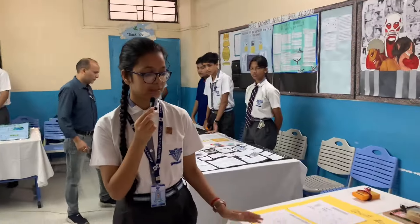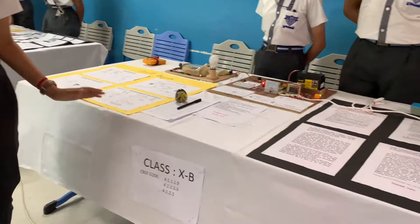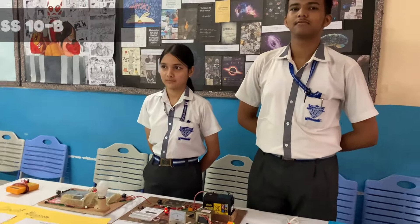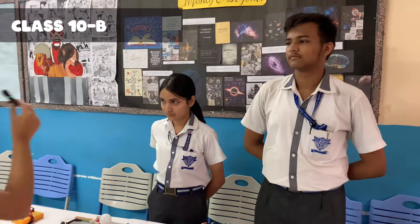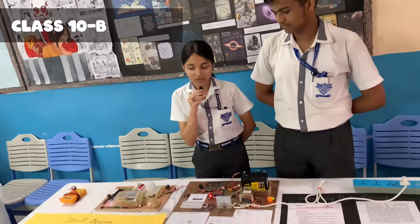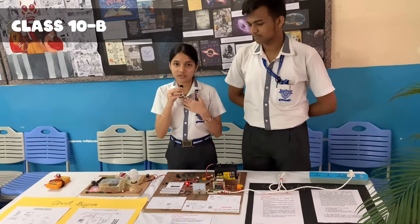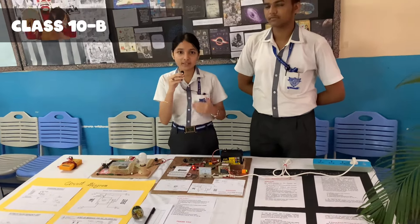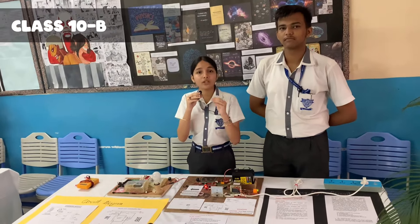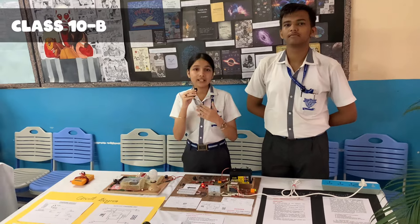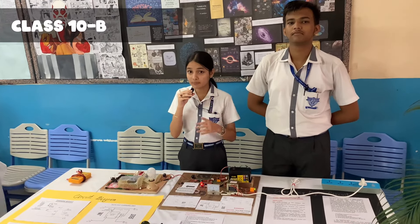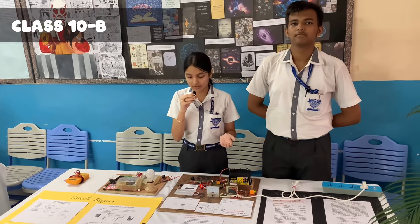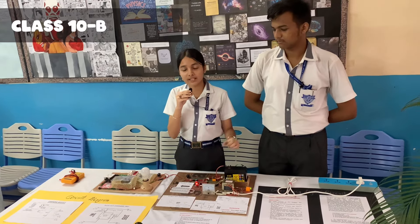Now we have a model made by the students of Class 10B; it is on the emergency light circuit. Good morning everyone. The project we are discussing today is the emergency light circuit. The main objective of this model is to provide electricity to financially unstable people who cannot afford inverters, since they are very costly nowadays. It is a very cost-efficient model that works within about 4,000 rupees.